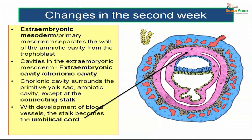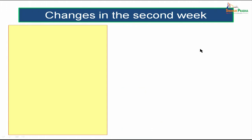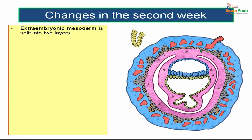The connecting stalk is developing as the umbilical cord in future. The extra-embryonic mesoderm follows the rule of two — it is split into two layers: the somatopleuric layer and the splanchnopleuric layer of the extra-embryonic mesoderm. These are the two layers formed during the second week of intrauterine period.